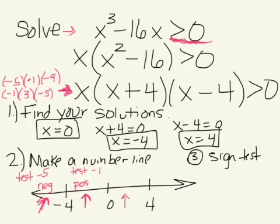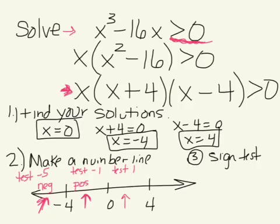Now test a value between 0 and 4 — I'll test x = 1. Plugging in: (1)(1 + 4)(1 - 4) = (1)(5)(-3) = -15. So anything in this region is negative.